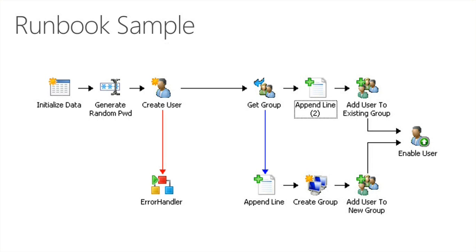Below that, you will see the error handler activity, which is an activity that calls another runbook to perform error handling. On the right, it will grab a group, and depending on whether the user is already in that group, it will add the user to the existing group, or if that group doesn't exist, it will create the group and then add the user to the new group. At the very end, it will enable that user in Active Directory.